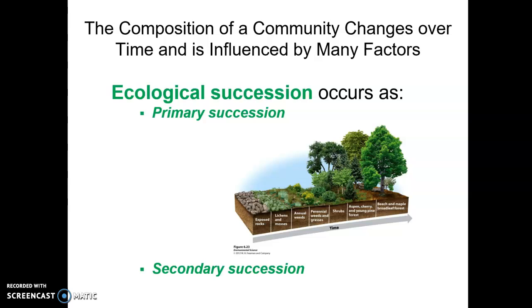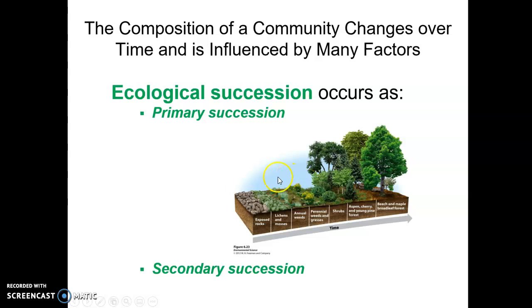Certain species like lichens and mosses break down rocks and turn them into soil. The more and deeper the soil, and the more nutrient-rich it becomes, you progress through annual weeds, perennial weeds and grasses, then slightly larger shrubs, then trees like aspen, cherry, and young pines. Eventually you might end up with a beech and maple broadleaf forest. That process is called ecological succession — a succession of species in a community. Starting from bare rock, that's primary succession.